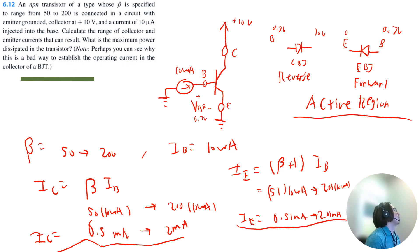And then the maximum power dissipated. So that would be the current from the base multiplied by voltage at the base, and then we're going to add collector current multiplied by voltage at the collector.